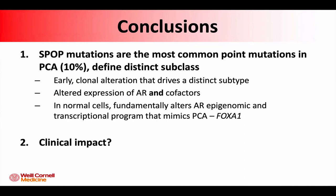Brief conclusions for this section: SPOP mutations are the most common point mutations in prostate cancer and define a distinct biological subclass. It's an early clonal alteration that causes altered expression of AR and its cofactors. In genetically normal cells, these SPOP mutations fundamentally alter the AR epigenomic and transcriptional program in a way that starts to mimic prostate cancer, with FOXA1 being a dominant signal.